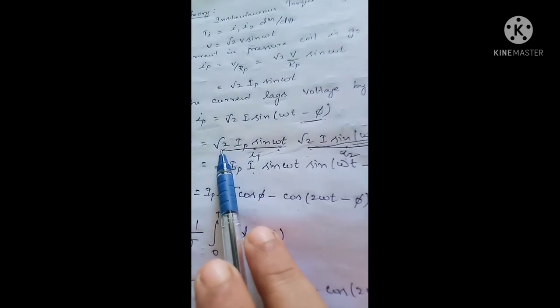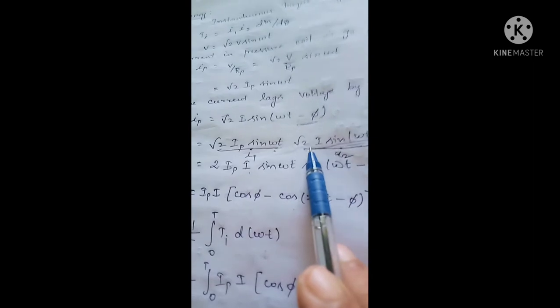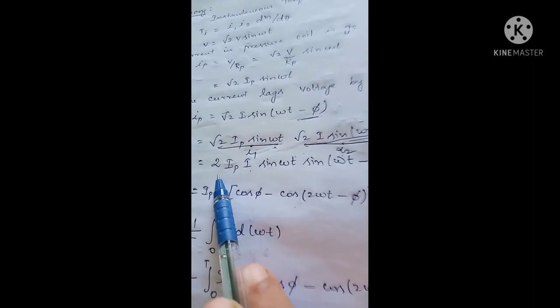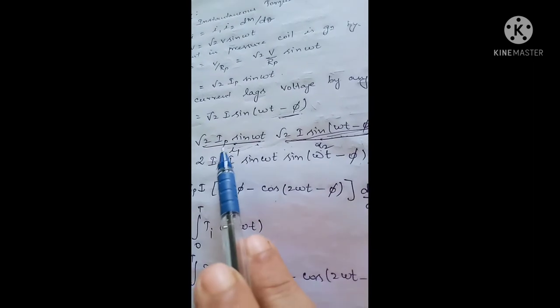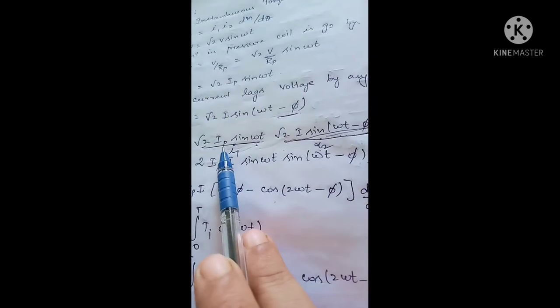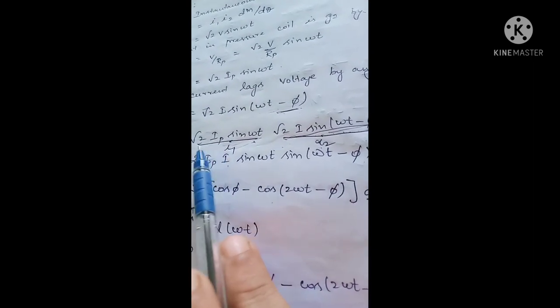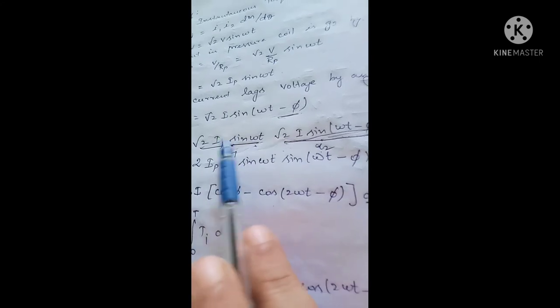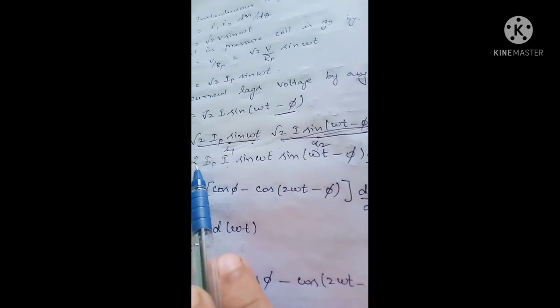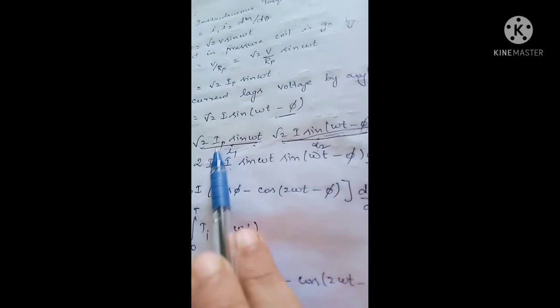Since √2 × √2 = 2, and combining constants, we can write the expression as 2 · Ip · I · sin(ωt) · sin(ωt − φ) · dM/dθ.